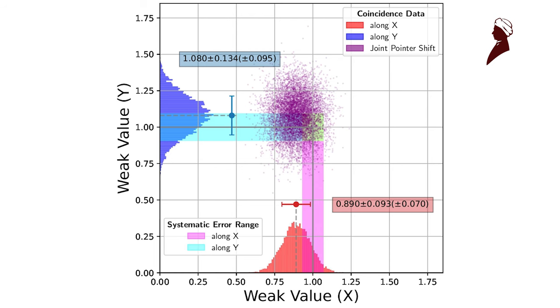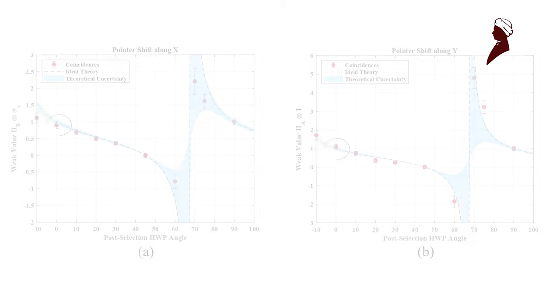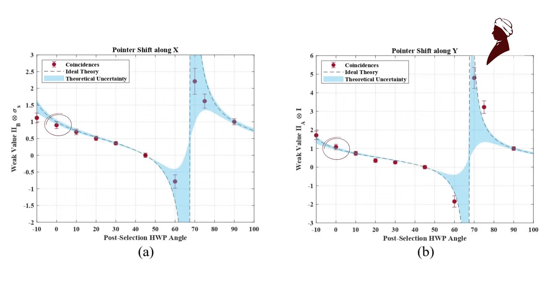Here you see the x and the y weak values which have been simultaneously measured, both of them are one with a certain error. So the x weak value is the polarization weak value and the y weak value is the location weak value of the same photon. And here you see how the weak value is changing as a function of what is called the post selection angle.